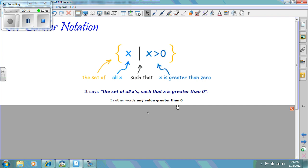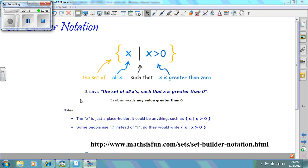Again, in just a couple notes, the X is just a placeholder. We could use other letters such as Q, R, Y. And then, again, some people use a colon instead of the vertical bar. So they would write the set of all X, colon, which means such that X is greater than 0.